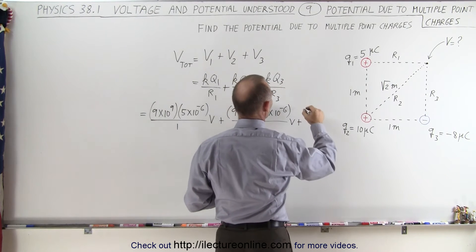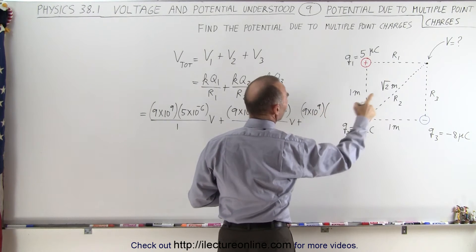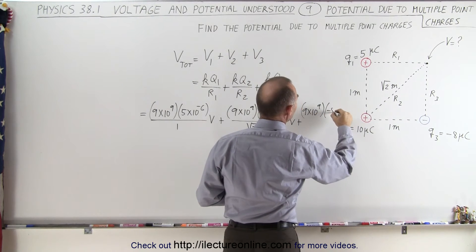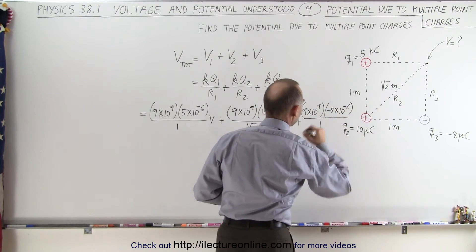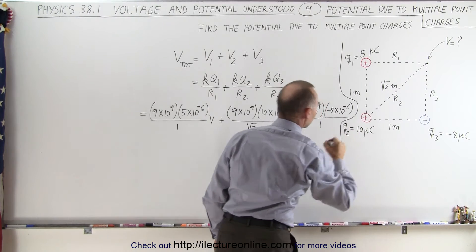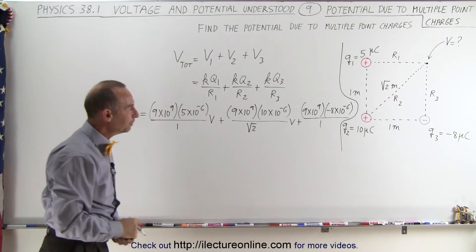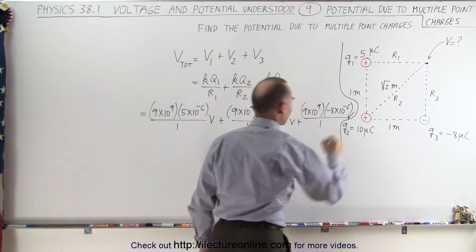Plus the third one, which is 9 times 10 to the 9th, times a negative 8 microcoulombs, all divided by, again the distance is 1. Let me put a line in here so we don't get confused, and let's put down volts as well.